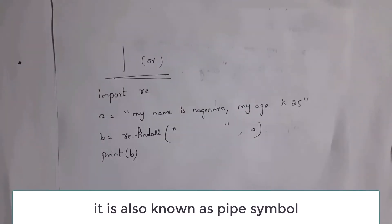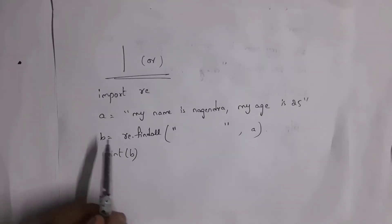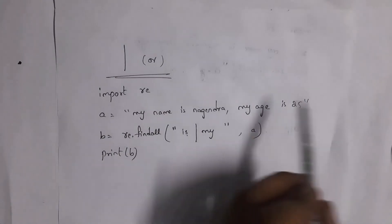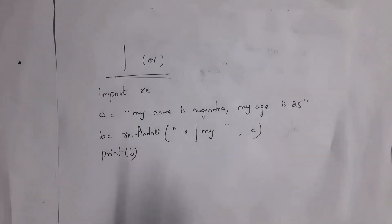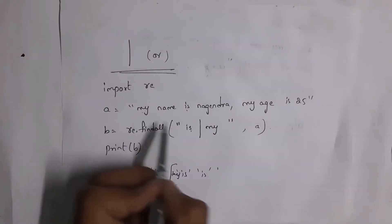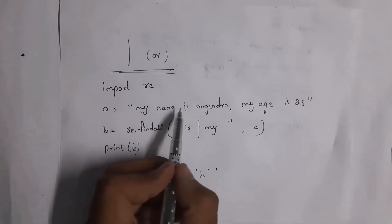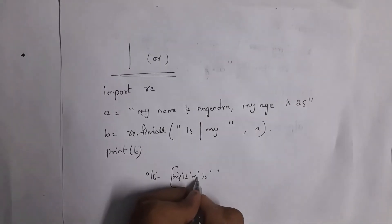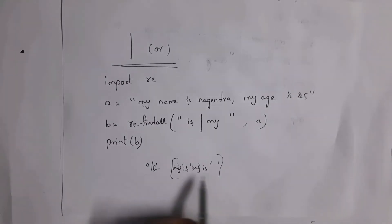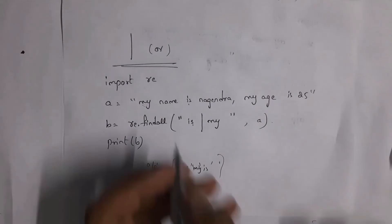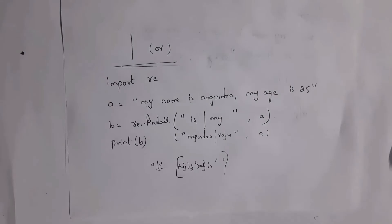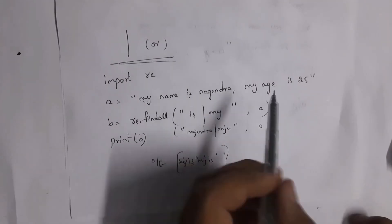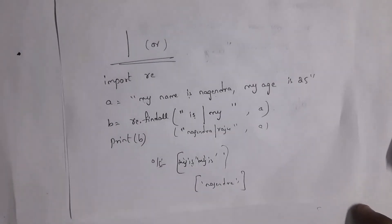Next I will explain the use of the pipe symbol (|), which means OR. Writing 'is|my' in findall checks whether 'is' or 'my' is present. It prints in order: my, is, my, is — because both words appear multiple times in the sentence. Writing 'Nagendra|Raju' checks for either name; Nagendra is present so output is ['Nagendra'], and since Raju is not present it is not printed.